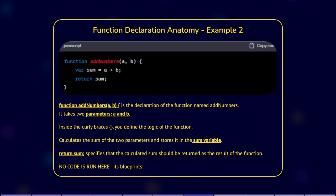In this example, function addNumbers(a, b) is a declaration of the function named addNumbers. It takes two parameters, a and b. Inside the curly braces, you define the logic of the function. Here it calculates the sum of the two parameters that are being sent in and stores it in the sum variable. Return sum specifies that the calculated sum should be returned as a result of the function.